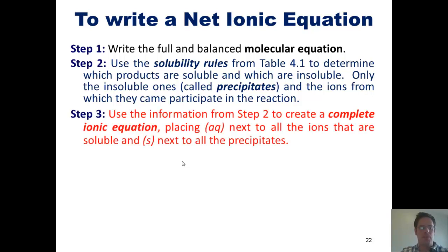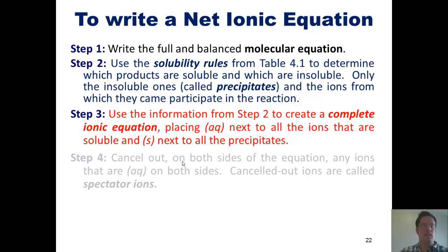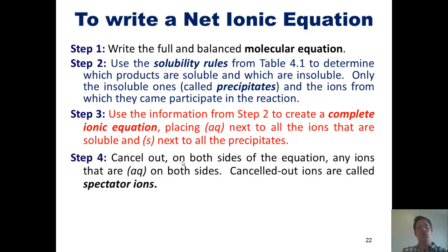Step 3: use the information from step 2 to create a complete ionic equation, placing AQ next to all of the ions that are soluble and S next to all of the precipitates. Step 4: cancel out on both sides of the equation any ions that are AQ on both sides. Canceled out ions are called spectator ions.